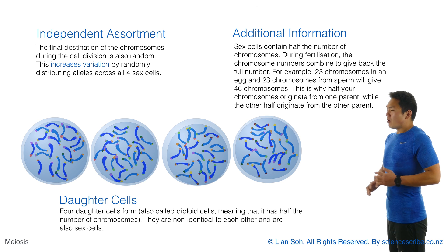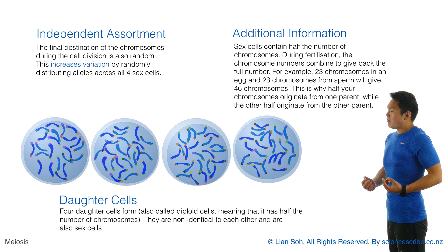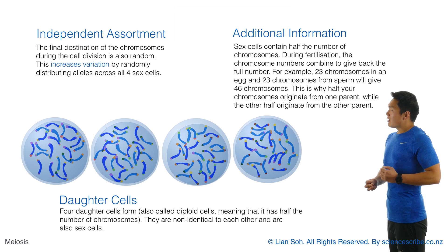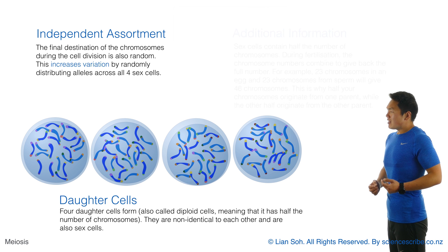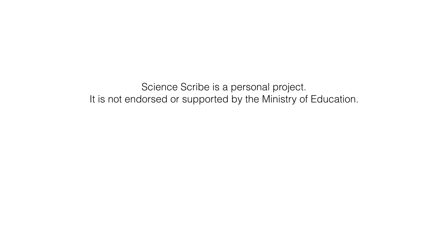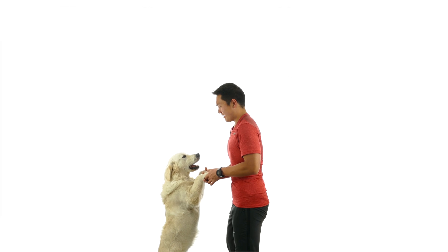Throughout the whole process of meiosis, all that has happened is a randomization of where the distribution of alleles are going to be in the final four daughter cells. At no point during meiosis are new genes or new alleles formed. At the end of meiosis, you can see that there are four daughter cells, they are all non-identical to each other, and they have half the number of chromosomes compared to the original parent cell.